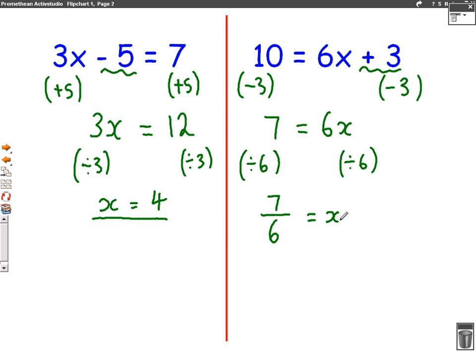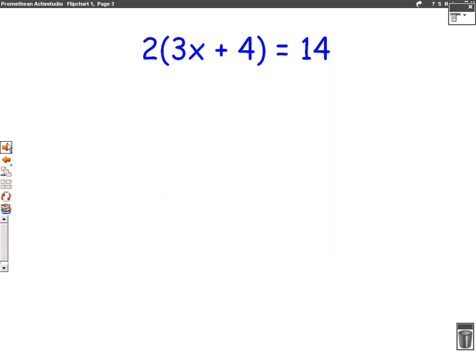Now we're going to do some with brackets in. So here's our next question. 2, open brackets, 3x plus 4 equals 14. This is no different. It's just one extra step, which is expanding the brackets. Something that we've practiced many times. So when we expand the brackets, we put on arrows like I've done on the board.